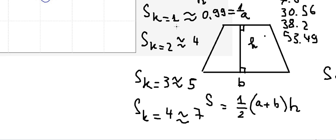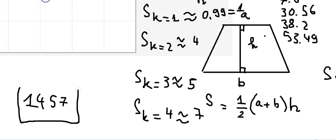So the final answers we need to write are 1, 4, 5, and 7. That is the final answer we write in the answer room here. This is the end — thank you for watching.